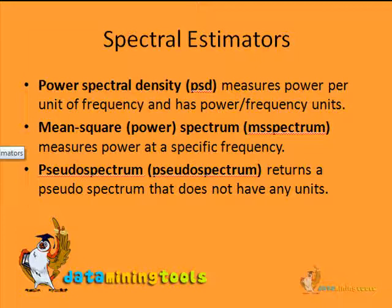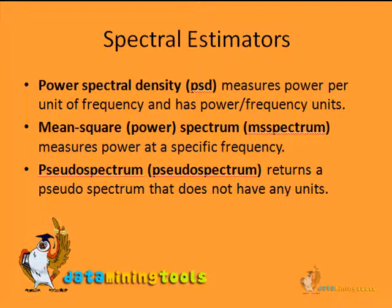Now, regarding spectral estimators: the power spectral density (PSD) measures power per unit of frequency and has units of power per frequency. The mean square spectrum measures power at a specific frequency. The pseudo spectrum returns a pseudo spectrum that does not have any units. Let us now learn about spectral analysis using an example.